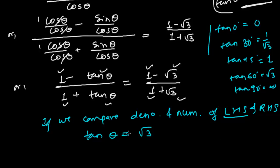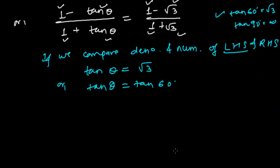So here in the place of √3, we can write tan 60°. So tan θ = tan 60°. Now by equating this, both sides, I can easily write: θ = 60°. This is our answer.